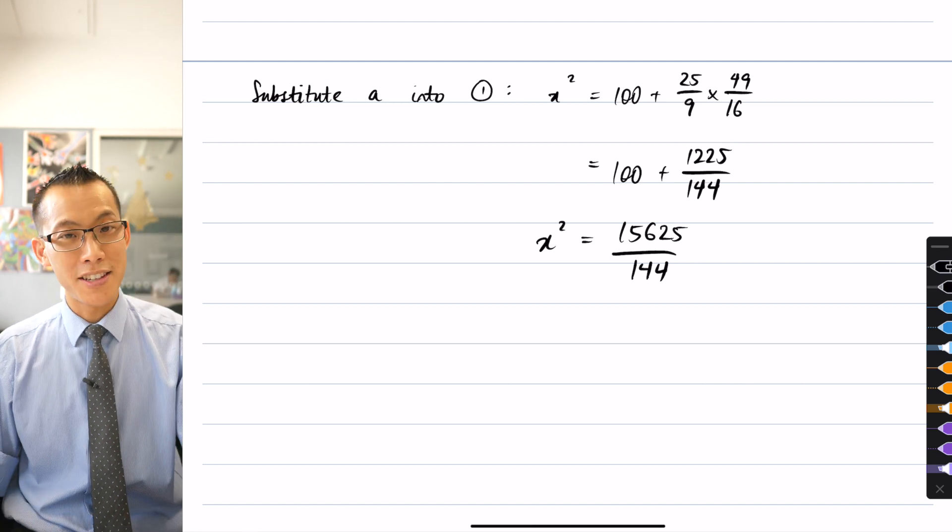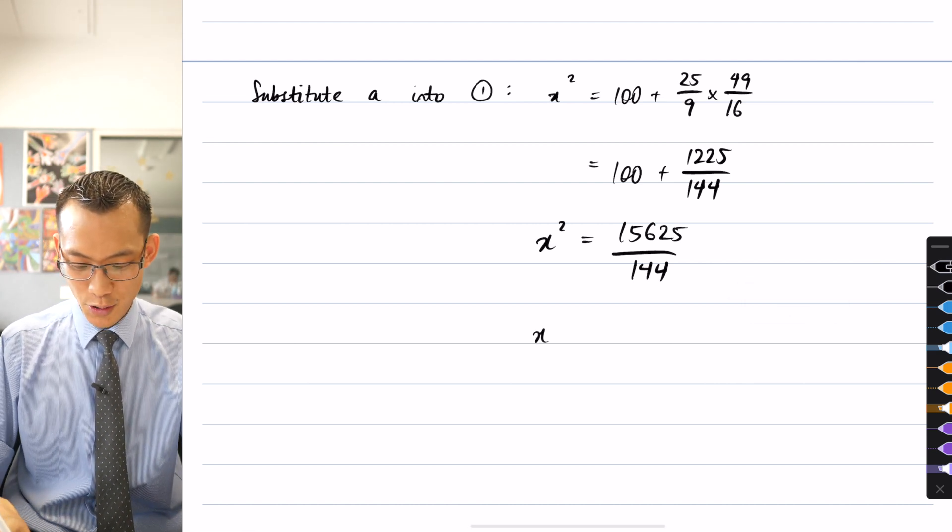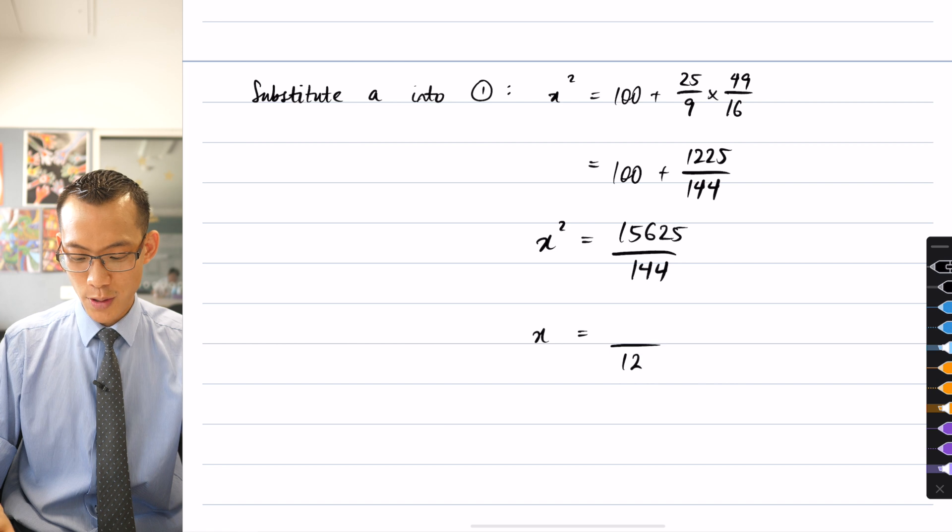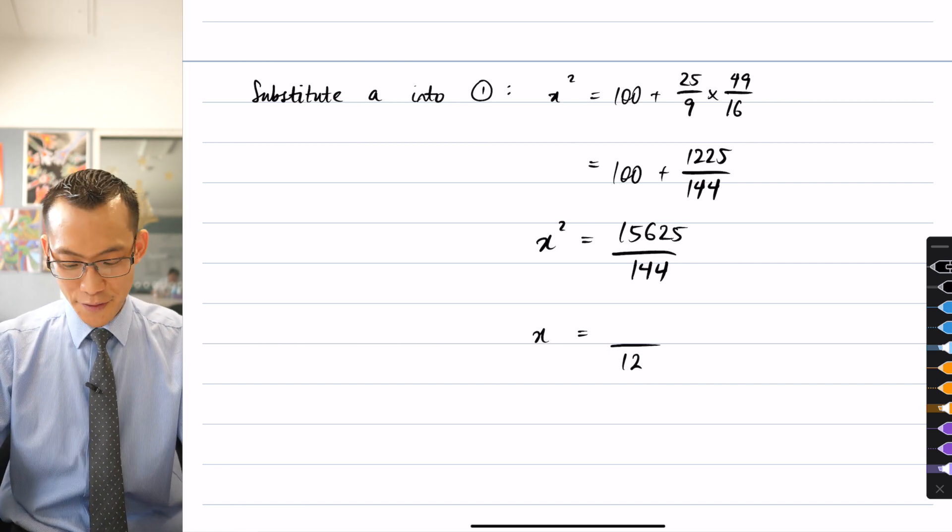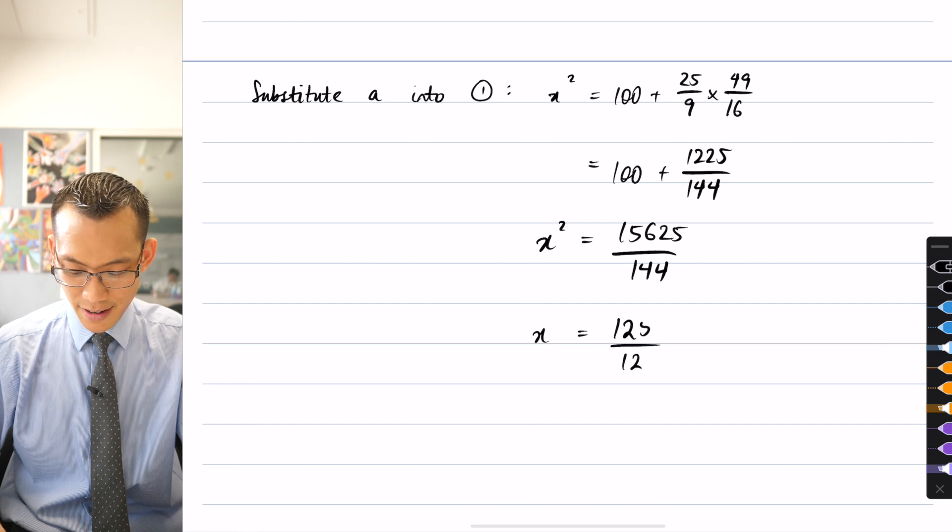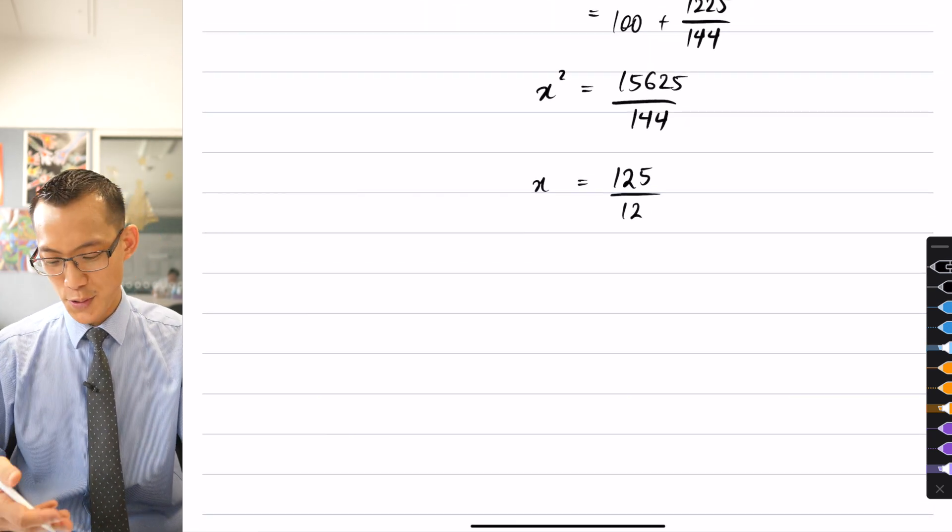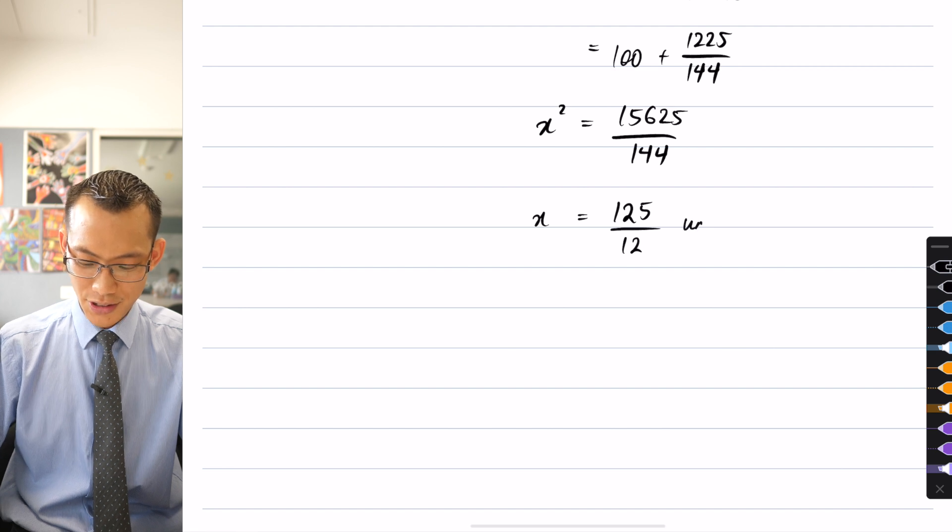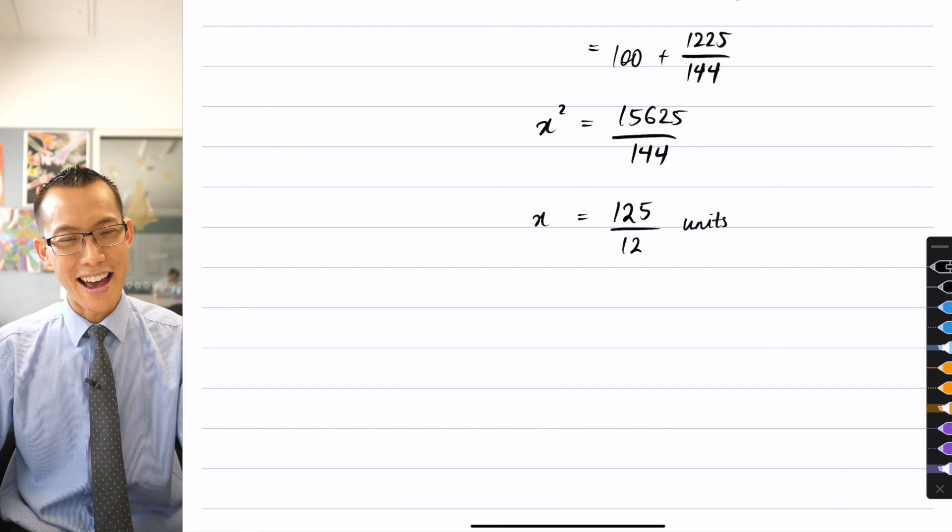And delightfully, you probably spotted the denominator there is a square number, so when you take the square root, you're just going to get over 12. But you might not have known that 15,625 is also a square number, it's 125. So of course, you could write that as a mixed numeral if you like, but I'm just going to leave that there because it's exact.